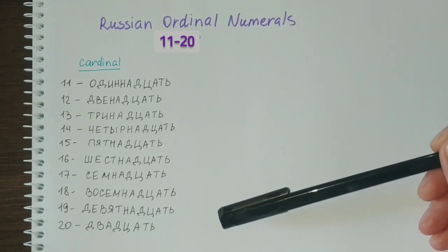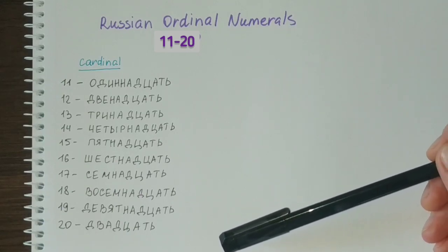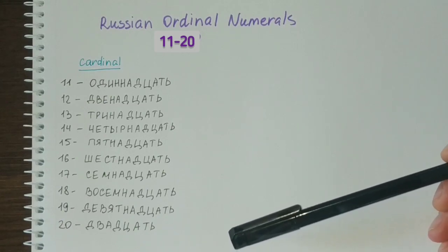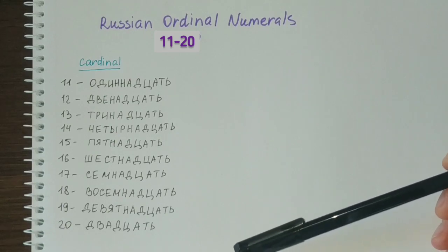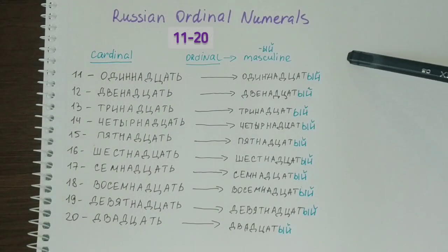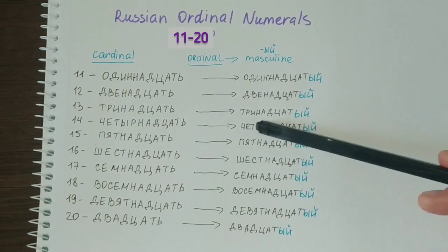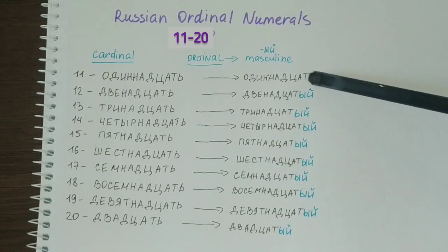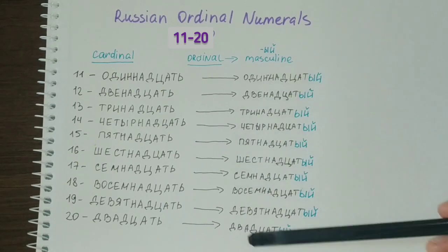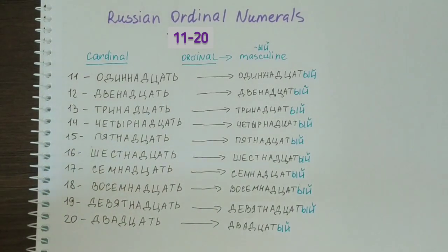Adding that ending forms the masculine gender form. In their ordinal form, Russian numerals basically function like adjectives, and they can also have feminine and neuter gender forms. So let us first go over the masculine gender forms of these ordinal numerals, and then we'll talk about feminine and neuter gender forms as well. Looking at them closely, you can see that the stem of these words stays the same — the only part that's missing is the soft sign, and we are adding the ending which is the indicator of the masculine gender. These words are treated like adjectives and can be used with masculine gender nouns. There is also a note about stress concerning one of the words, which we'll talk about when we get to it. So let us read them.